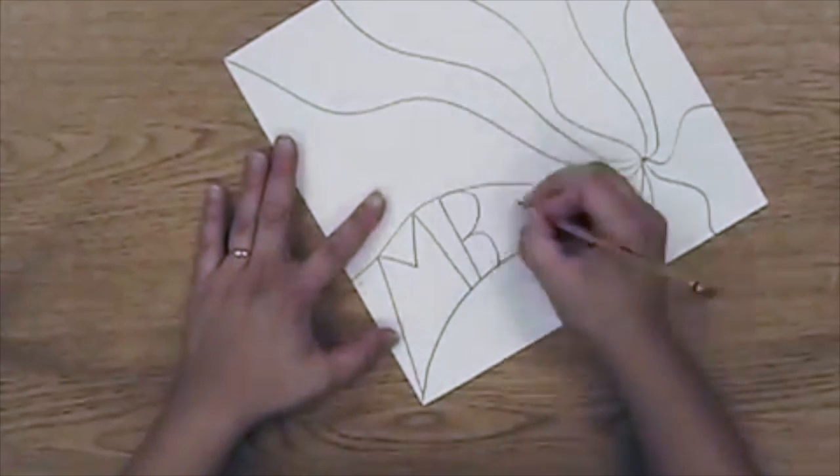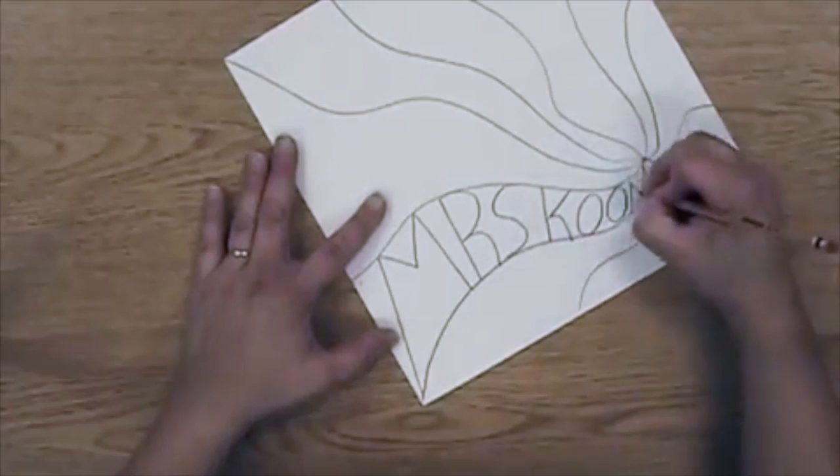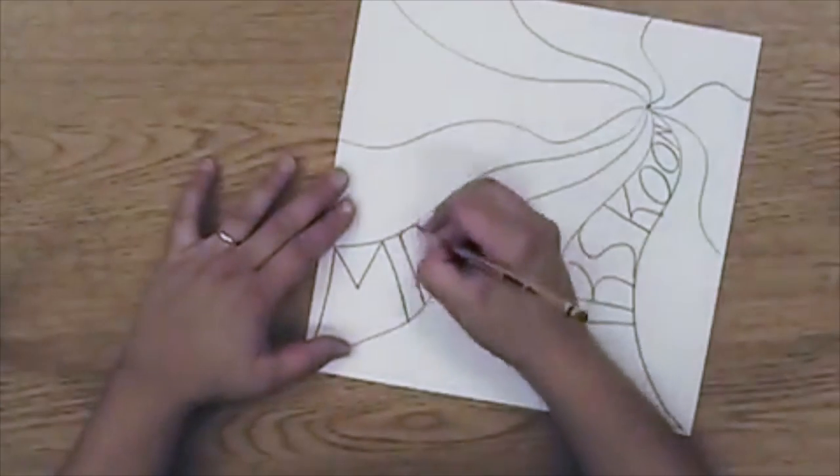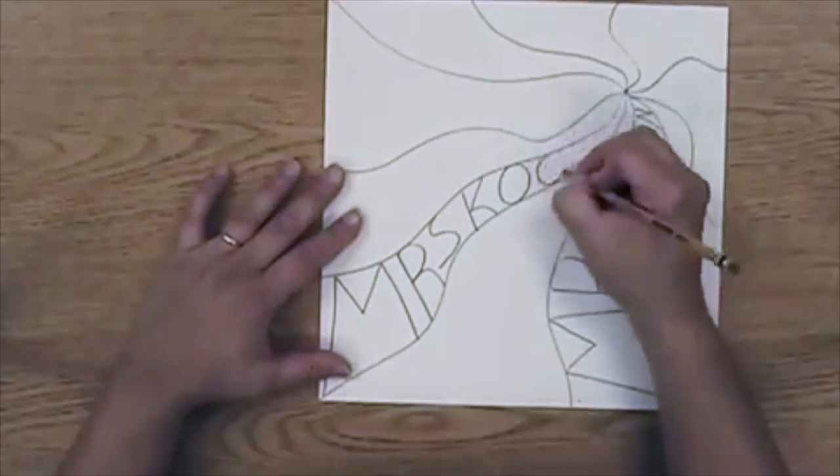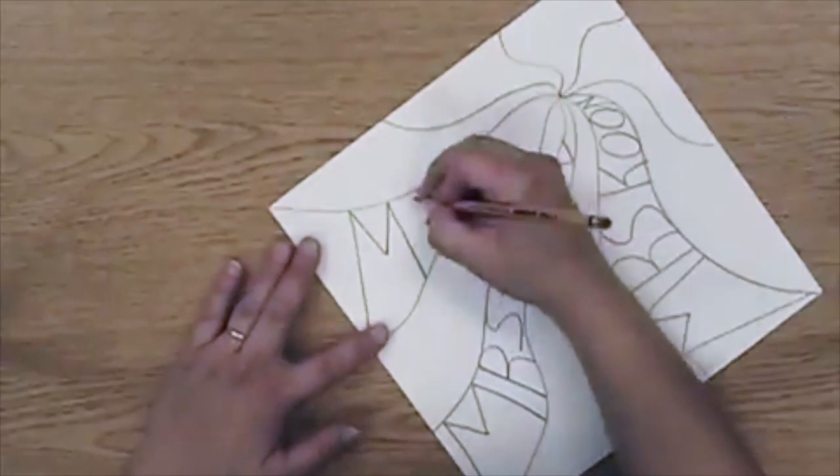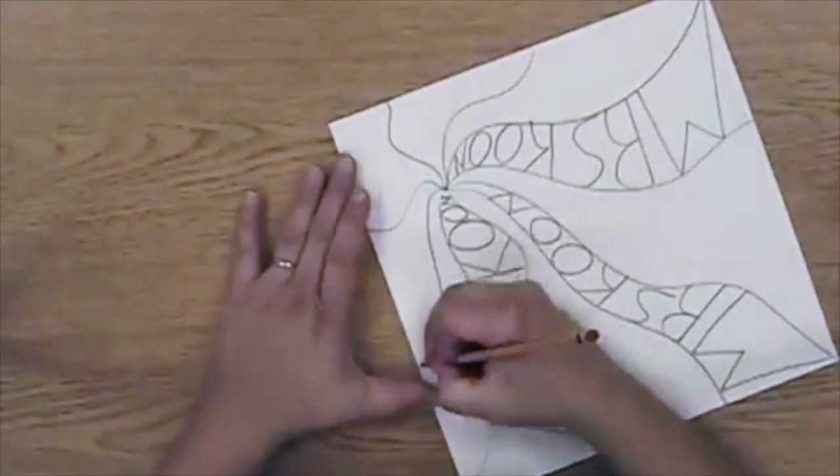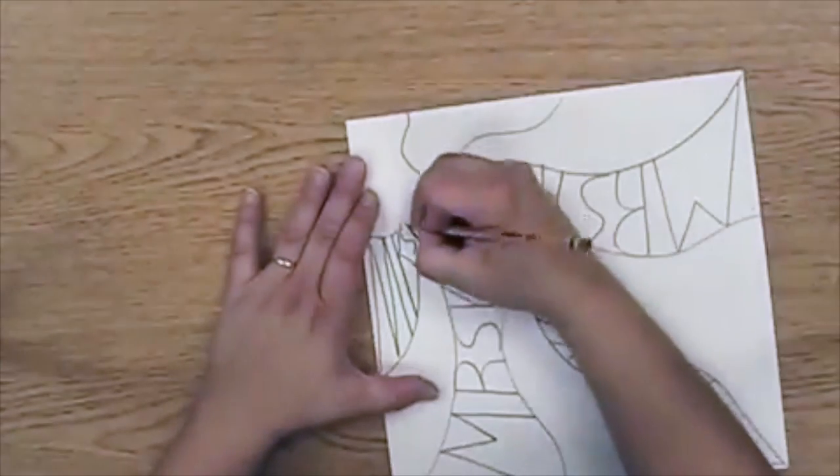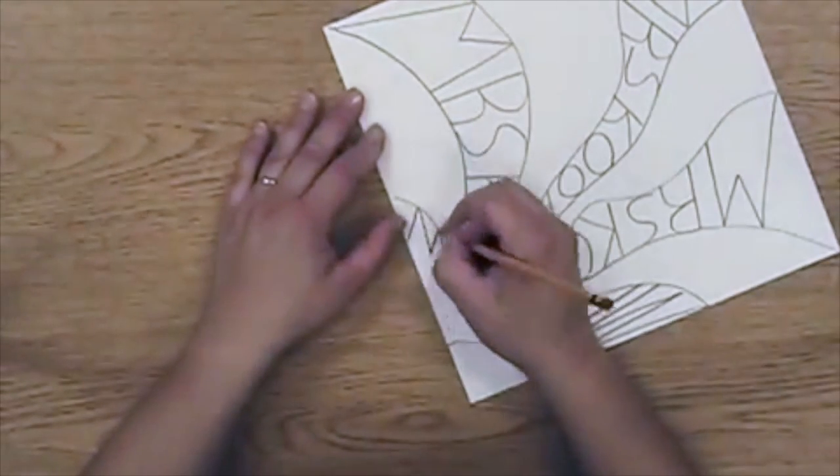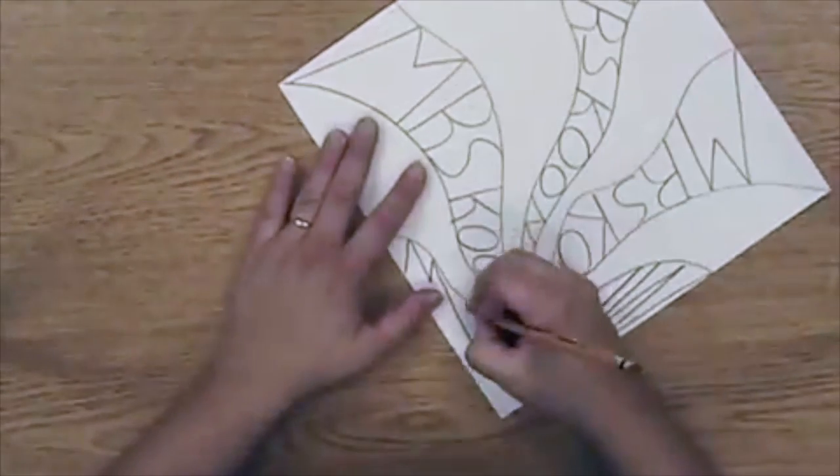See how I draw the letters all the way from the top to the bottom of that curved line. That's why you don't want your curved line to be too curvy. It's more of a wavy line. You can use all capital letters if you'd like for this. Might make it a little bit easier to get your name all the way to the top and the bottom of those lines.